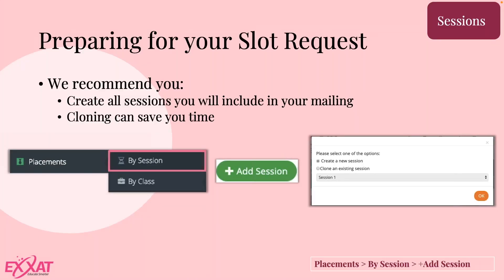Preparing for your slot request: before you can even begin, something you want to keep in mind is that you want to create all of your sessions that you will include in your mailing. This will help you through the process because the slot request has a step where it asks you to select your sessions. If they're not created yet, you have to select a placeholder before you can move to the next step. So if you don't want to go through that workaround, we recommend you create your sessions first. When creating a session, you have the option to either create or clone — cloning will save you a bunch of time.